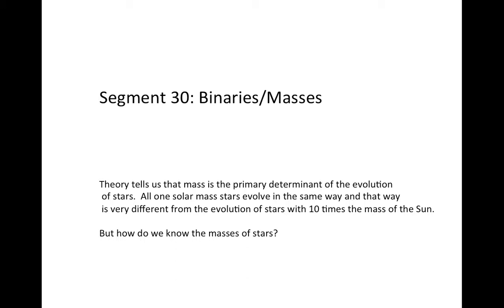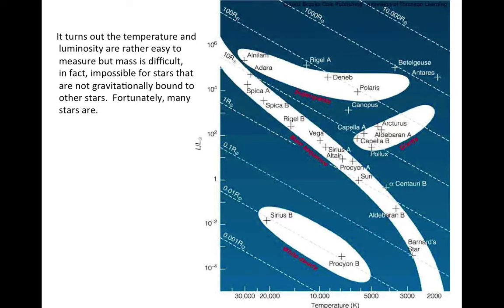But how do we know the mass of stars? It turns out that the temperature and luminosity that we put into the Hertzsprung-Russell diagram are rather easy to measure, but mass is difficult. In fact, it's impossible to measure the mass of stars that are not gravitationally bound to other stars so that we can tell their mass from their motions.